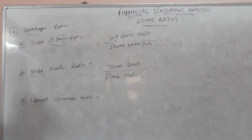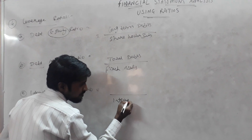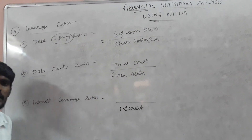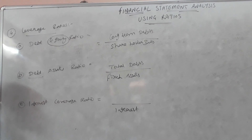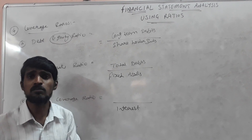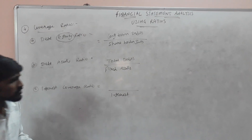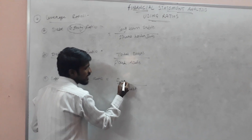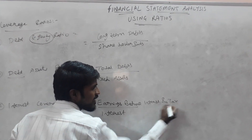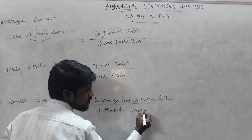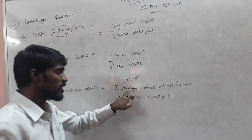Next comes the interest coverage ratio. In the interest coverage ratio, you have to pay the interest on the loans taken, or on the credit amount, or anything else. That interest amount — from profit you can pay the interest. So the formula is Earnings Before Interest and Tax, which is nothing but profit before interest and tax.